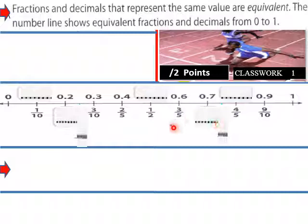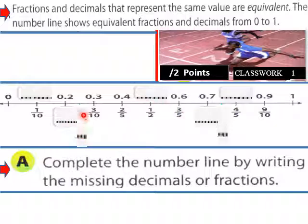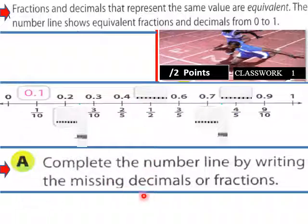The number line shows equivalent fractions and decimals from 0 to 1. We have 9 over 10 and 4 over 5 shown. For 1 over 10, the decimal would be 0.1. Complete the number line by writing the missing decimals or fractions. Coming back: 0.1 for 1/10, 0.5 for one half, 0.8 for 4 over 5.